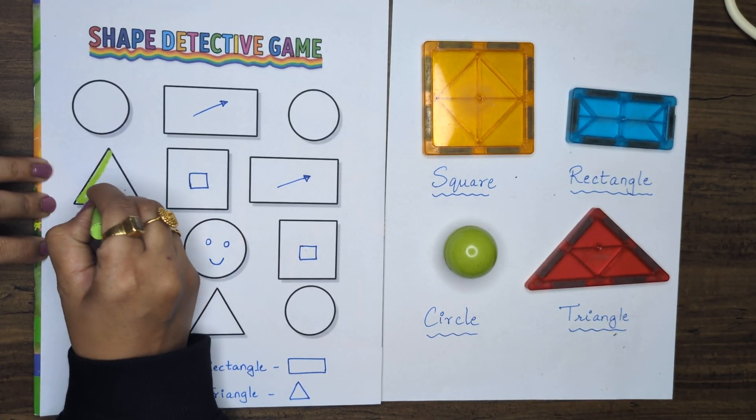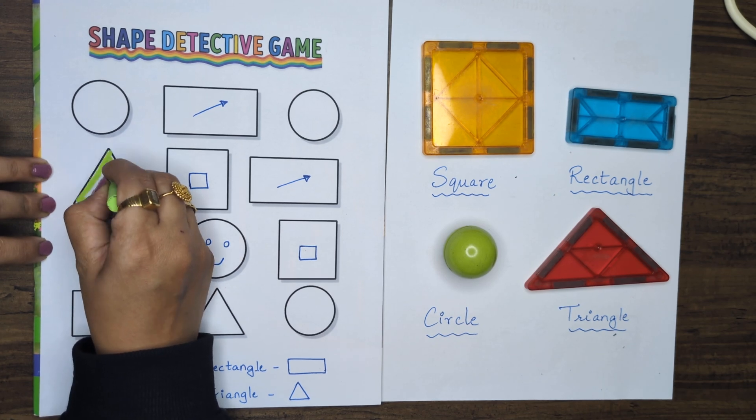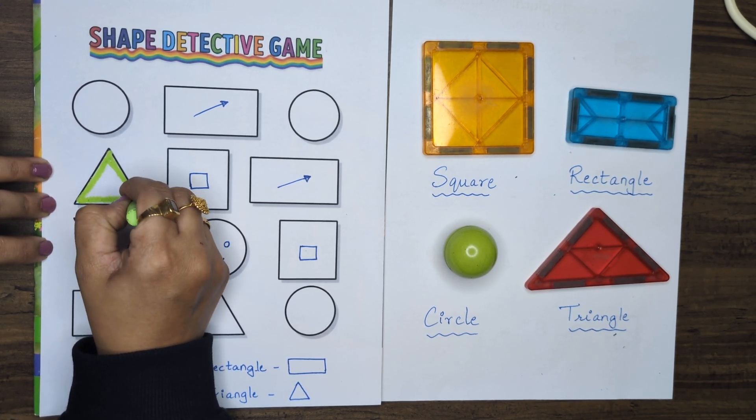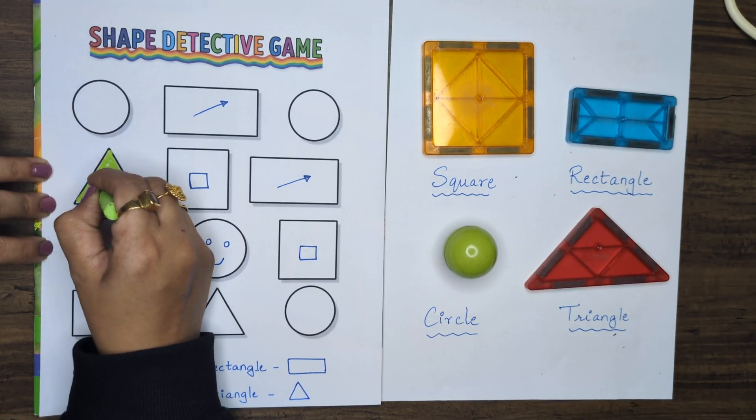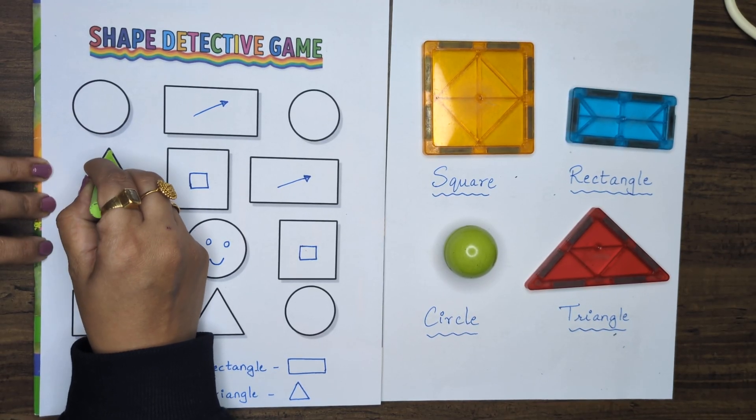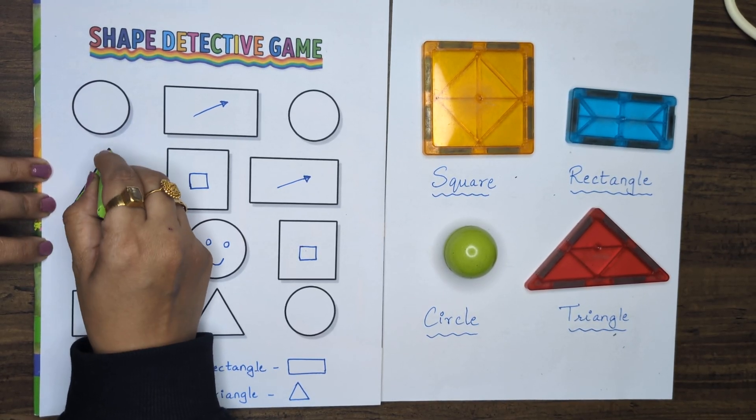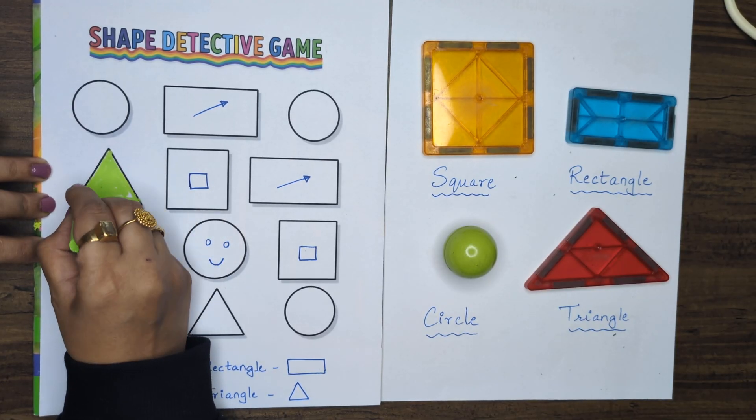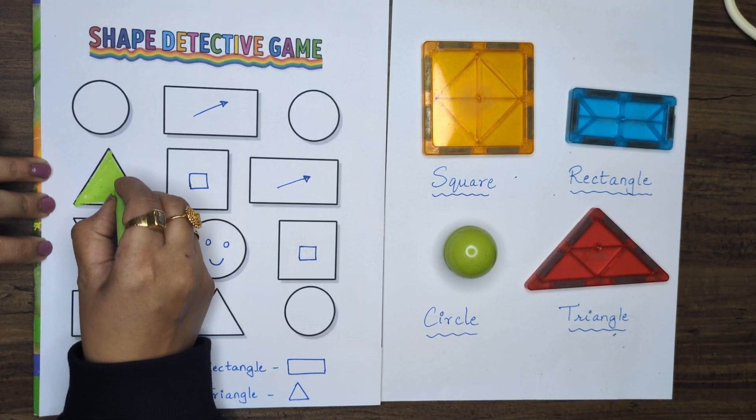Color it green. Beautifully color it green. Be ready for the next question which is going to be very interesting. I have colored this triangle green.